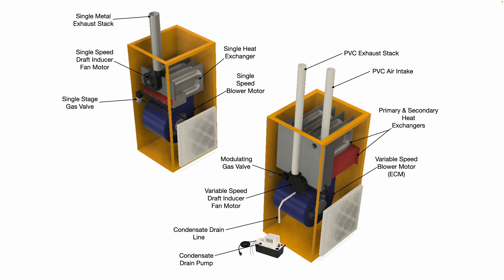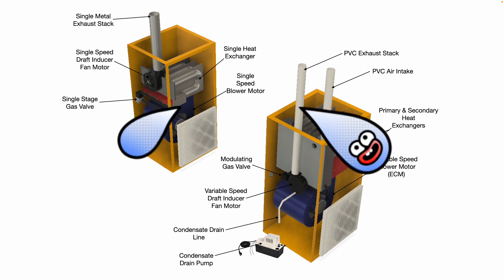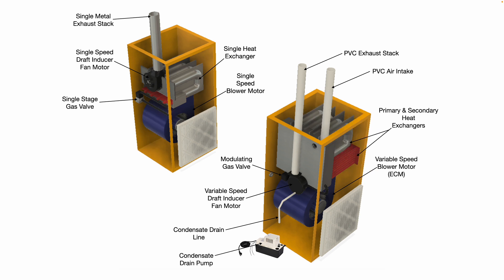That condensate drain line usually needs to go to a floor drain or to a condensate drain pump like you see here. There's a little float switch inside the condensate drain pump — when the float switch rises with the water level, it pumps the water out, and as the water level drops the float switch drops back down and shuts the pump off.